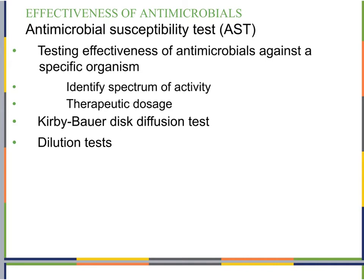We need to figure out standards — what can and can't kill what, and at what level — and then apply our therapeutic dosage levels. We can also test a particular patient's sample to see what the organism is or isn't resistant to given their specific infection. We can do this in a variety of ways; one example is the Kirby-Bauer disc diffusion test.